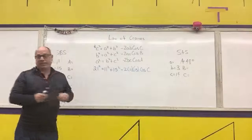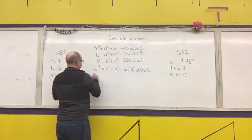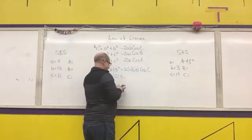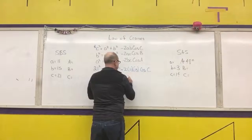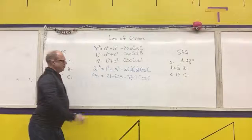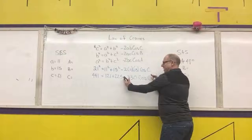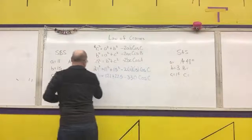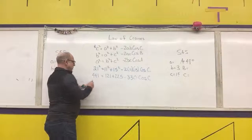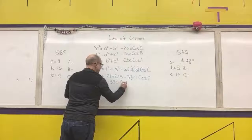Here's where students mess up. I'll compute: 441 equals 121 plus 225 minus 330 cosine C. Students sometimes try to bring the 330 over to the other side right away — you can't do that, because it's a multiplication problem. My next step is to subtract: 441 minus 121 minus 225 gives 95, so 95 equals negative 330 cosine C.